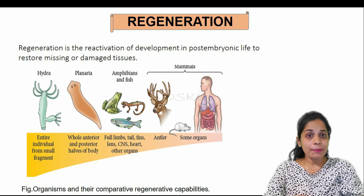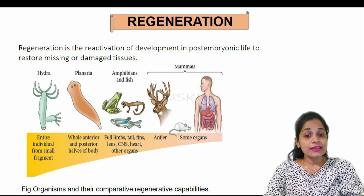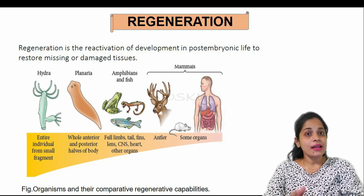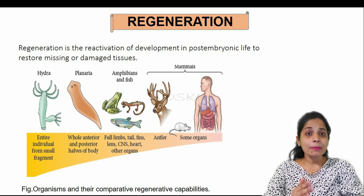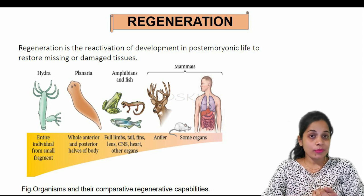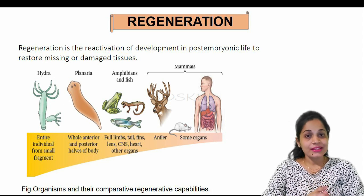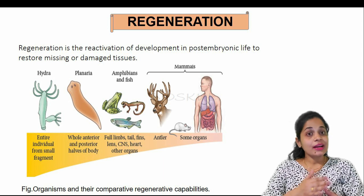In amphibians, the full limbs can be regenerated, as well as the tail. Fish are able to regenerate their fins as well as some organs like the heart. In mammals, they have the ability to regenerate some organs, specifically the liver in humans.